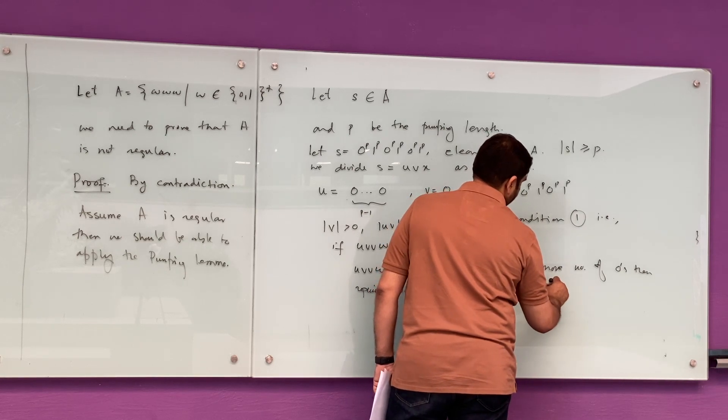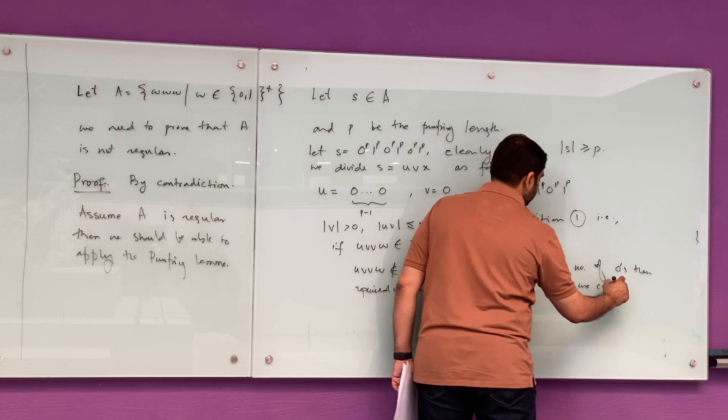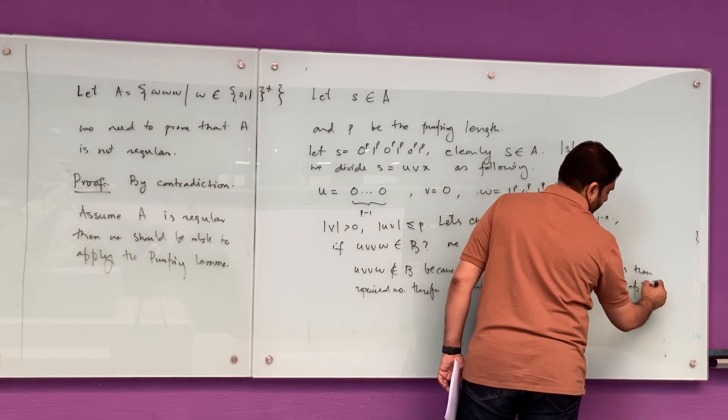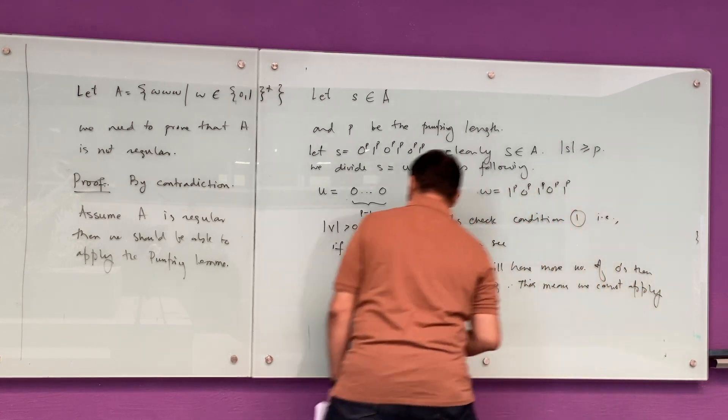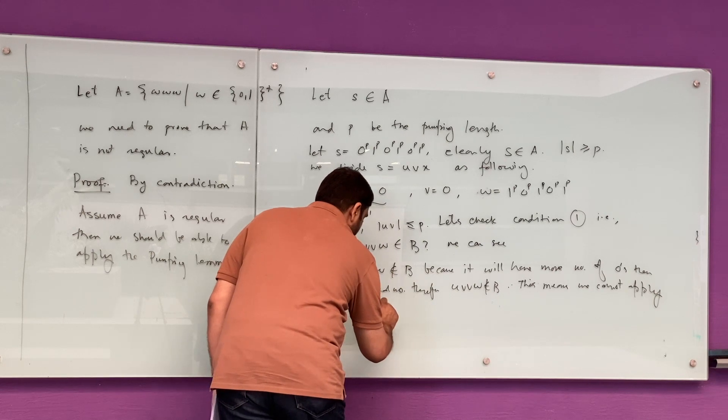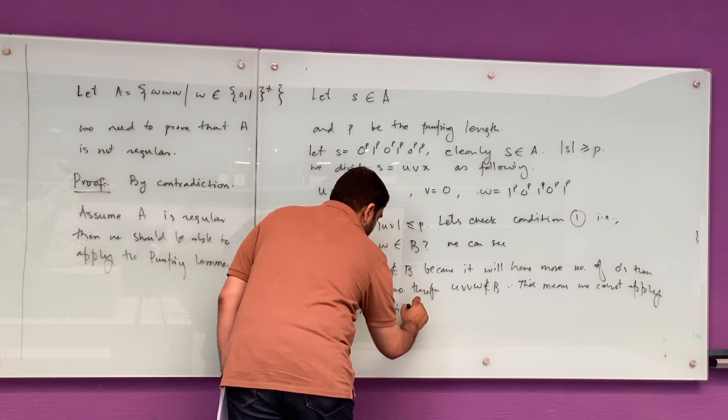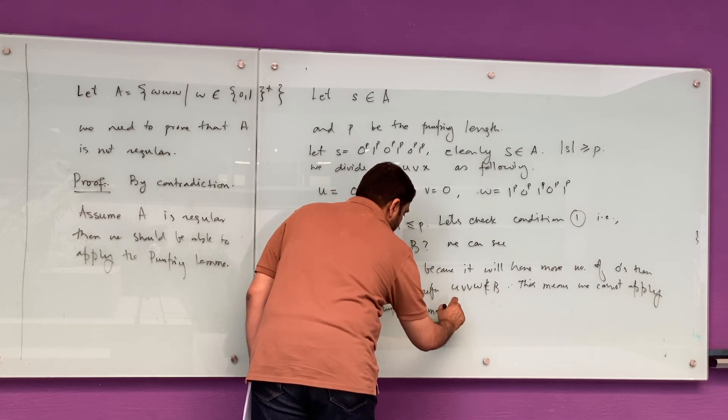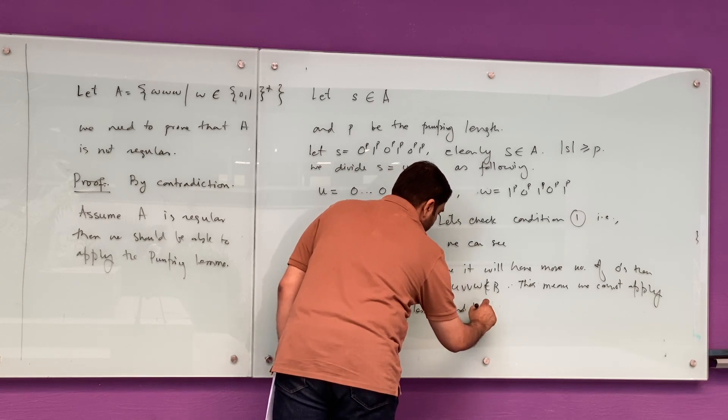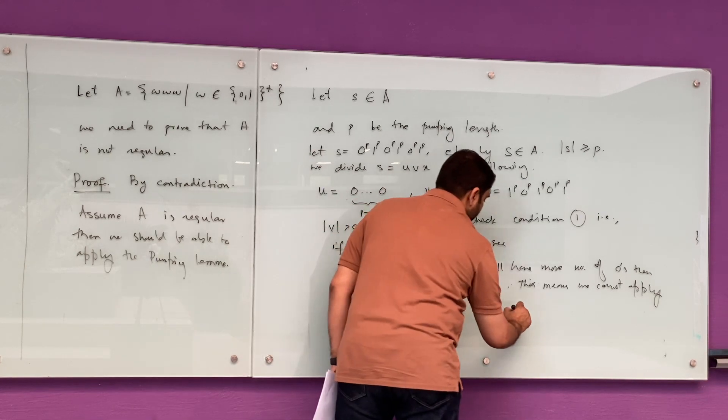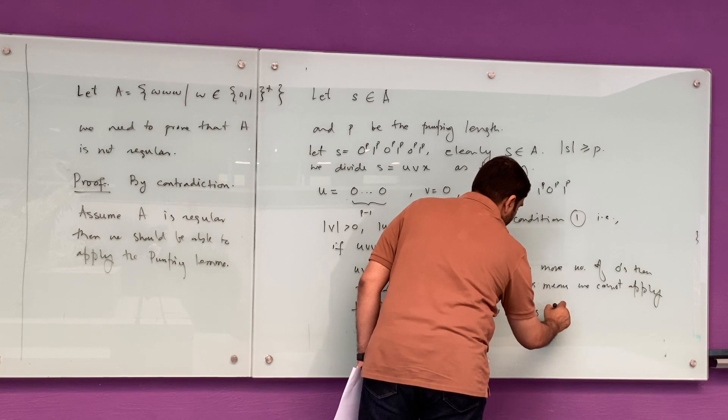But we can clearly see that it is not the case. Inserting more zeros into it will create an imbalanced string, which is definitely not in A, creating a contradiction. Hence this language is not regular.